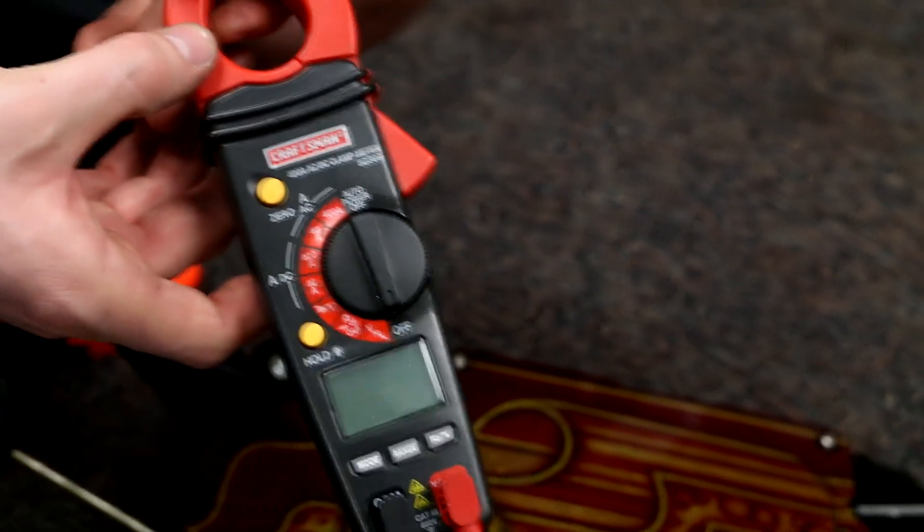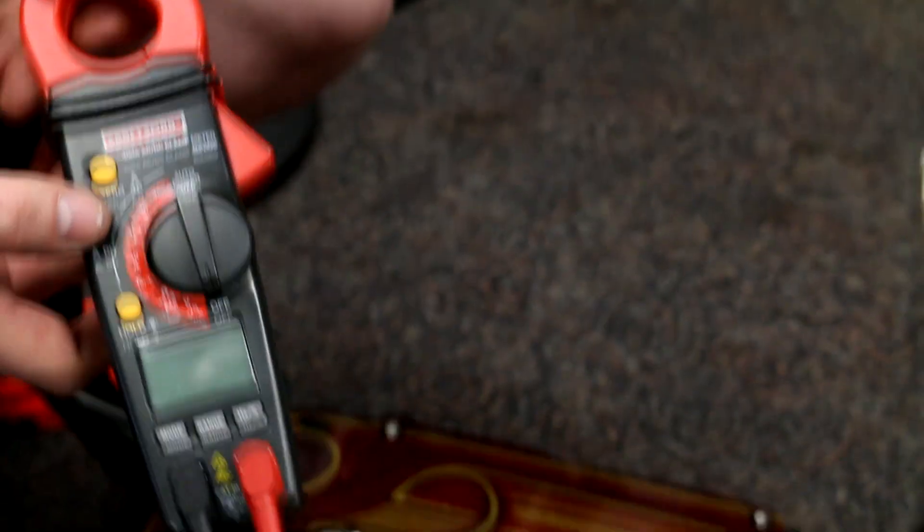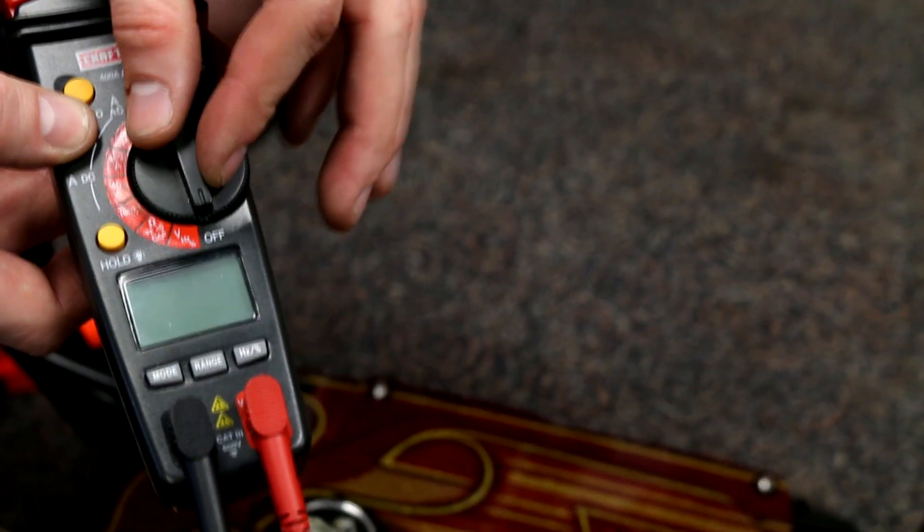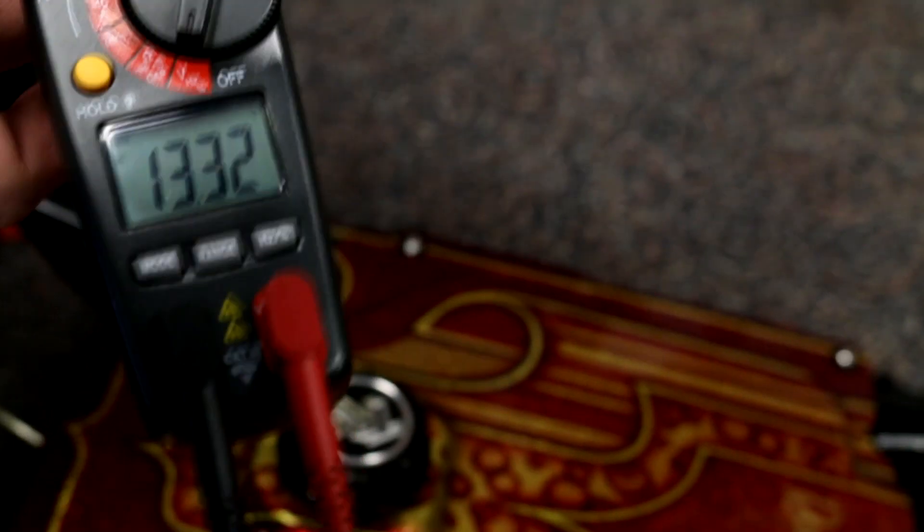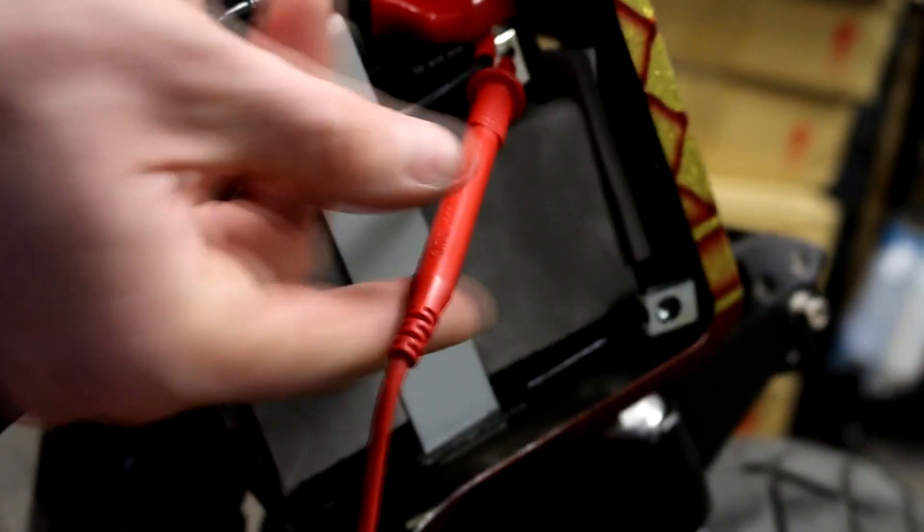Then you're going to need a voltmeter that looks like this. So what you're going to do is you're going to turn your voltmeter to volts, which on ours is the bottom one here, and hook it up to your battery.